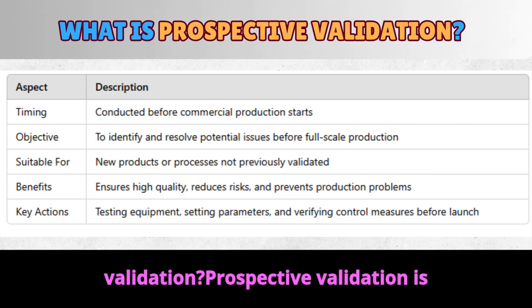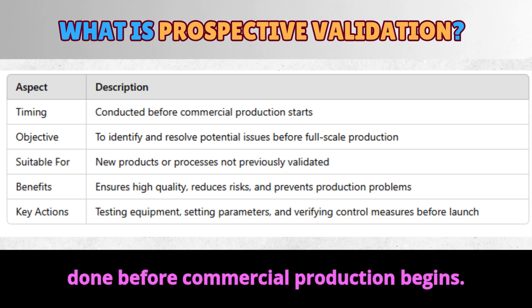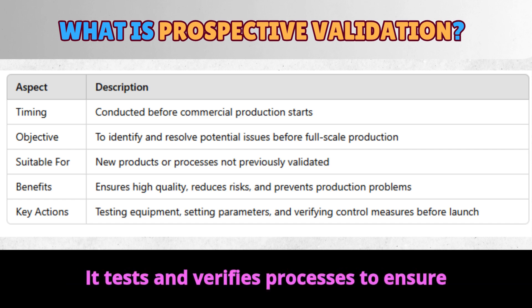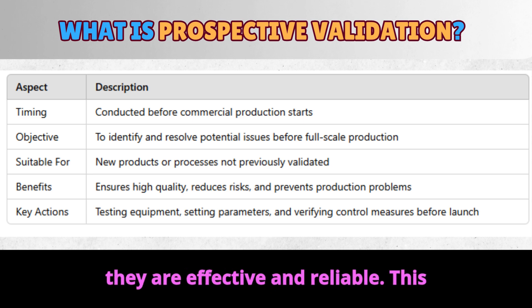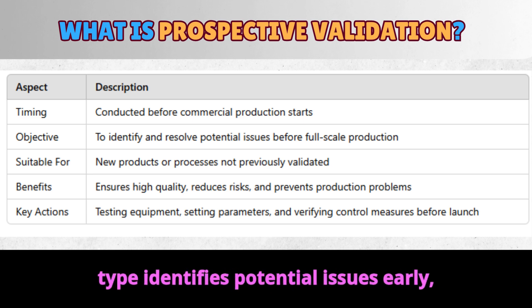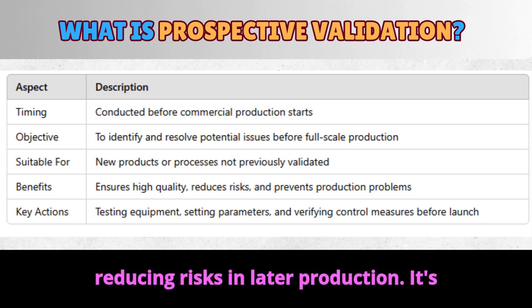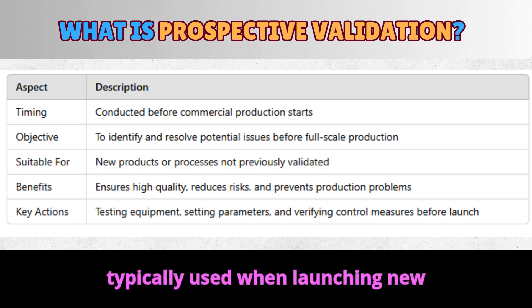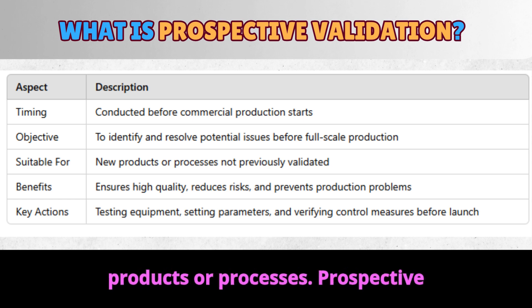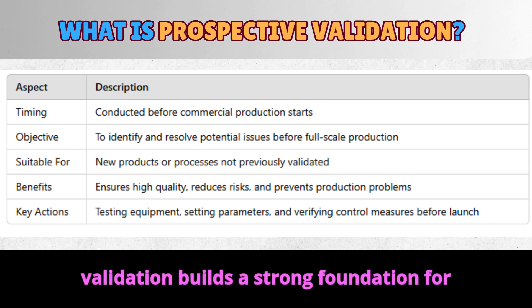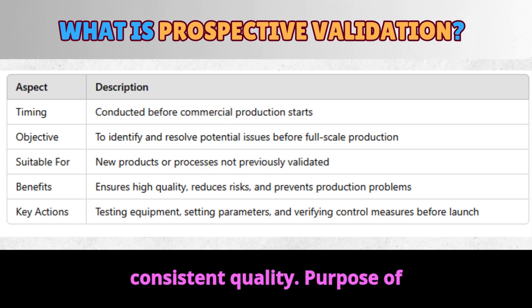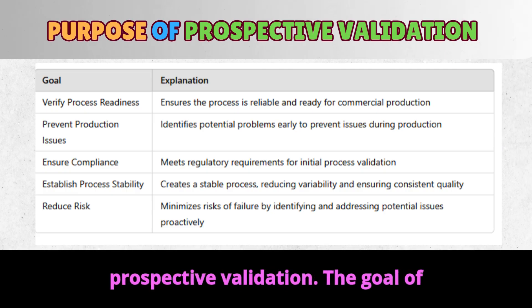What is prospective validation? Prospective validation is done before commercial production begins. It tests and verifies processes to ensure they are effective and reliable. This type identifies potential issues early, reducing risks in later production. It's typically used when launching new products or processes. Prospective validation builds a strong foundation for consistent quality.